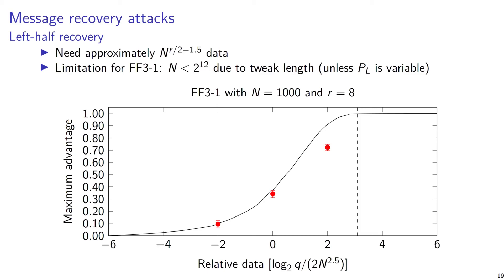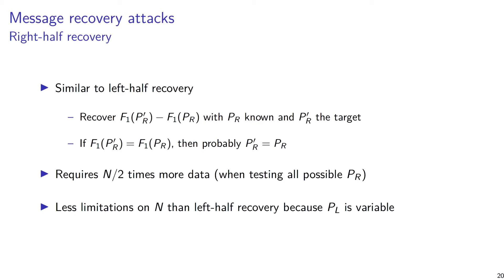Because of that, you cannot use this attack for large values of n — say n larger than 2 to the 12 — though this depends on the advantage you want to achieve. This limitation applies when PL must be a fixed value. But for right-half recovery, we don't have this issue, though right-half recovery requires a little more data.